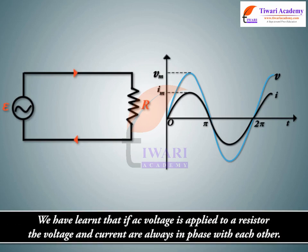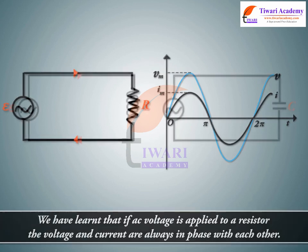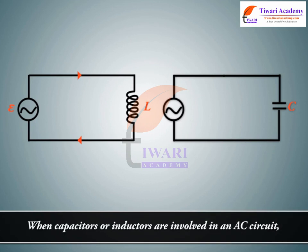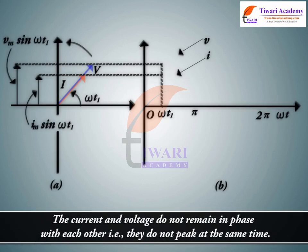We have learned that if AC voltage is applied to a resistor, the voltage and current are always in phase with each other. When capacitors or inductors are involved in an AC circuit, the current and voltage do not remain in phase with each other. That is, they do not peak at the same time.